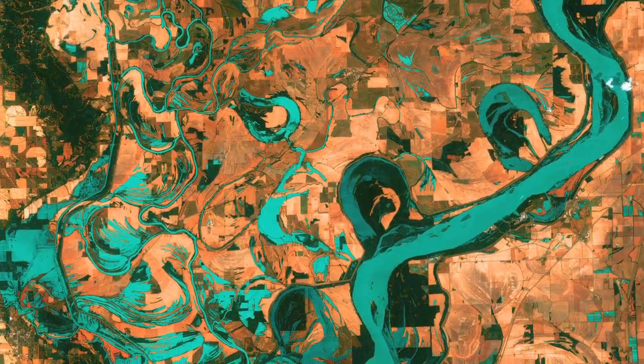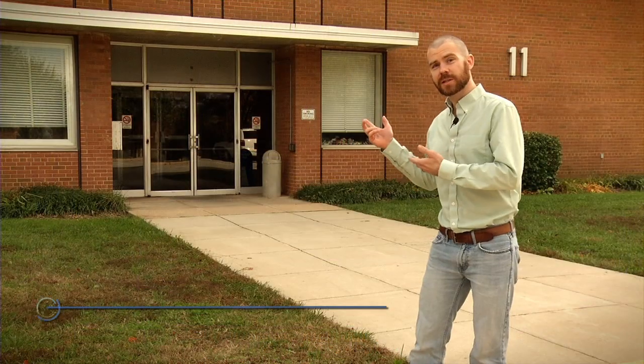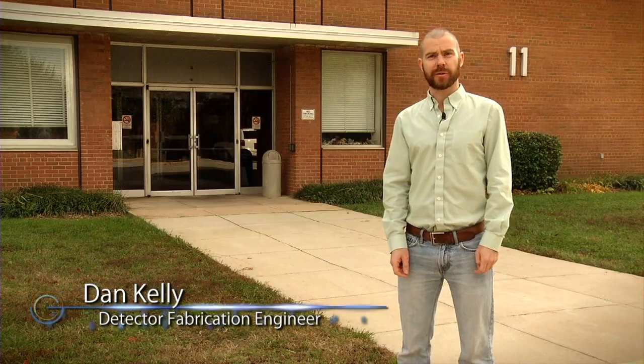And behind these images lies QUIP, the Quantum Well Infrared Photo Detector, which is processed here in the Detector Development Lab at NASA Goddard. Similar to the sensor in your digital camera or your cell phone, the QUIP detector is designed to be more sensitive and to detect specific wavelengths. Let me show you how these high-end detectors are created.